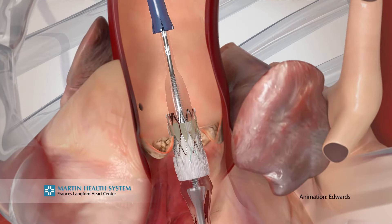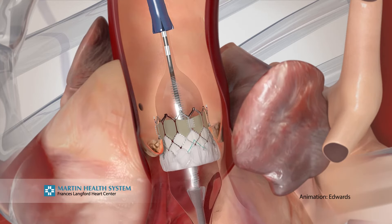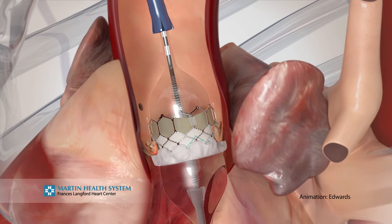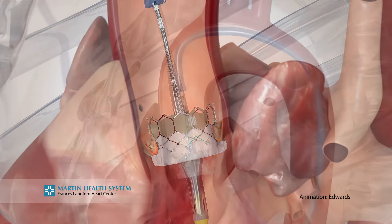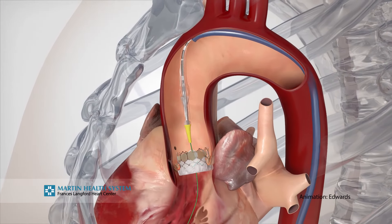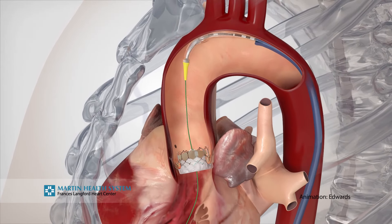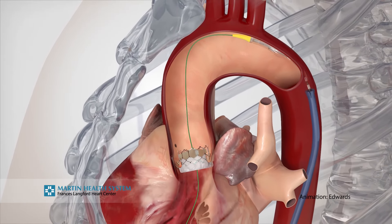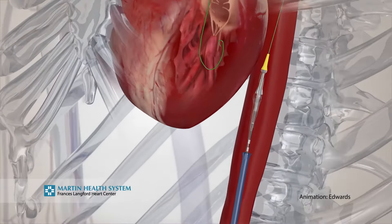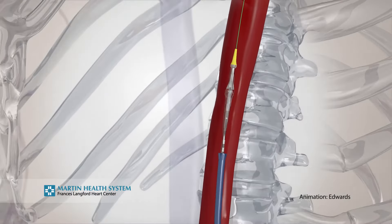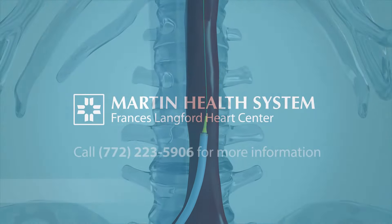Then we inflate it the way we do stents or balloons of that magnitude, allowing a new valve to be set in that area. Once the delivery catheter gets to the area, we inflate the balloon-expandable stent, the valve is positioned, and then the catheter comes out and the procedure is over.